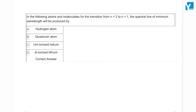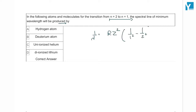In the following atoms and molecules, for the transition from n=2 to n=1, the spectral lines of minimum wavelength will be produced by which? Here you have a simple formula: 1/λ = Rz² × (1/1² − 1/2²).